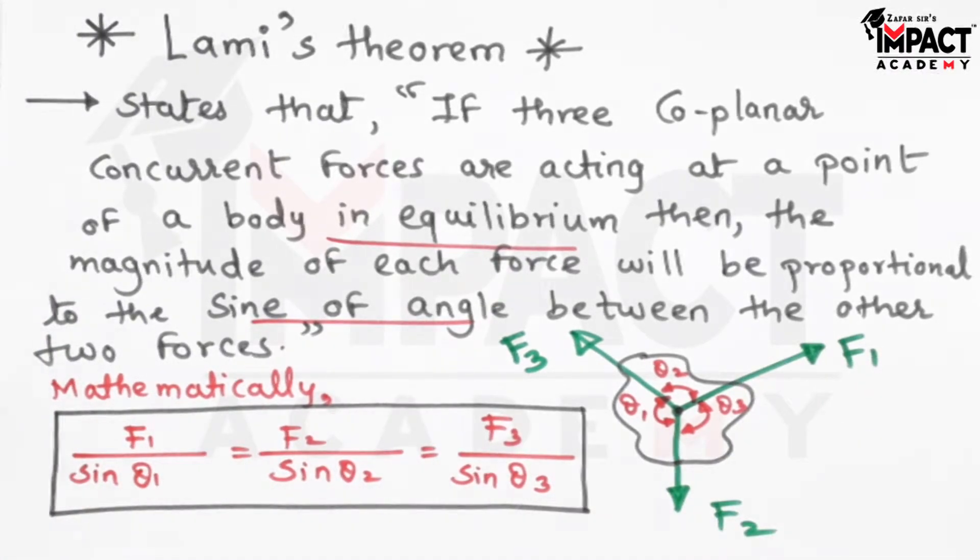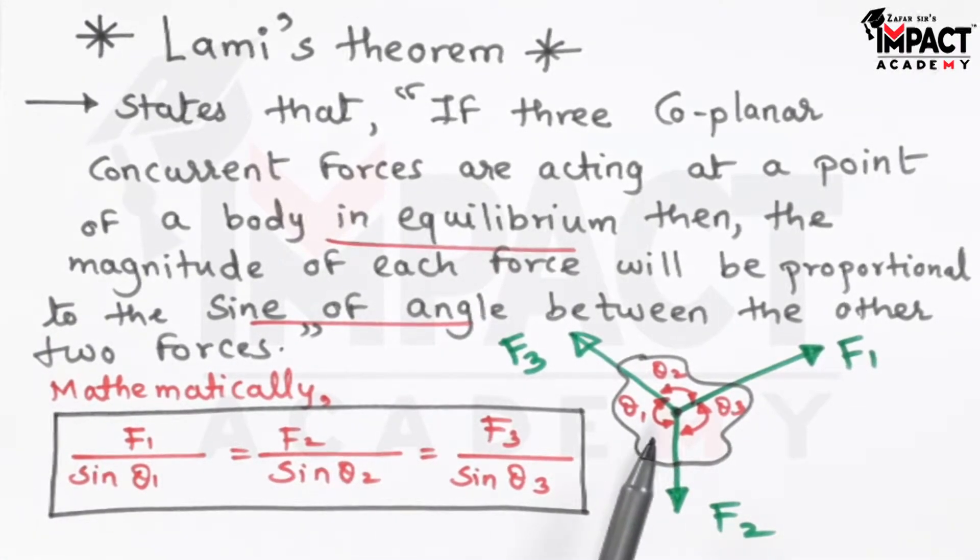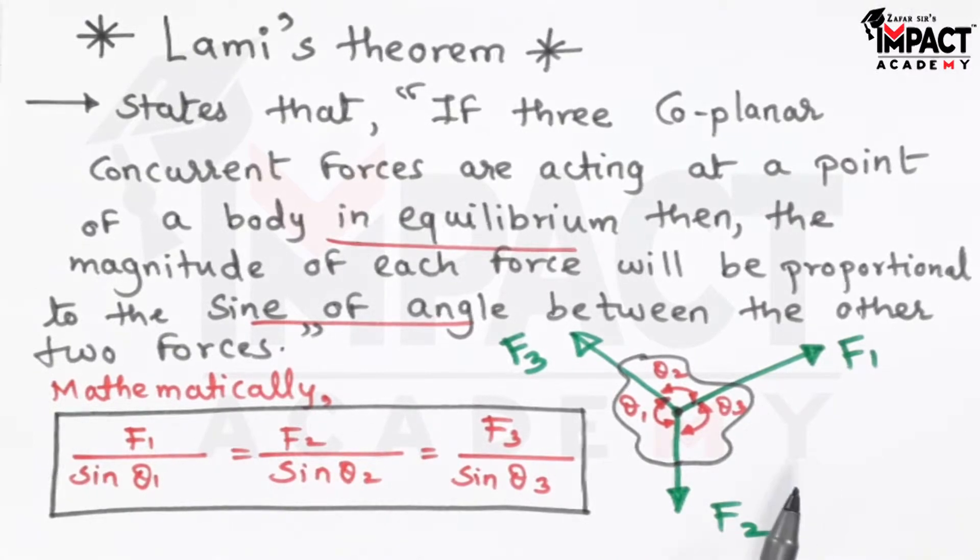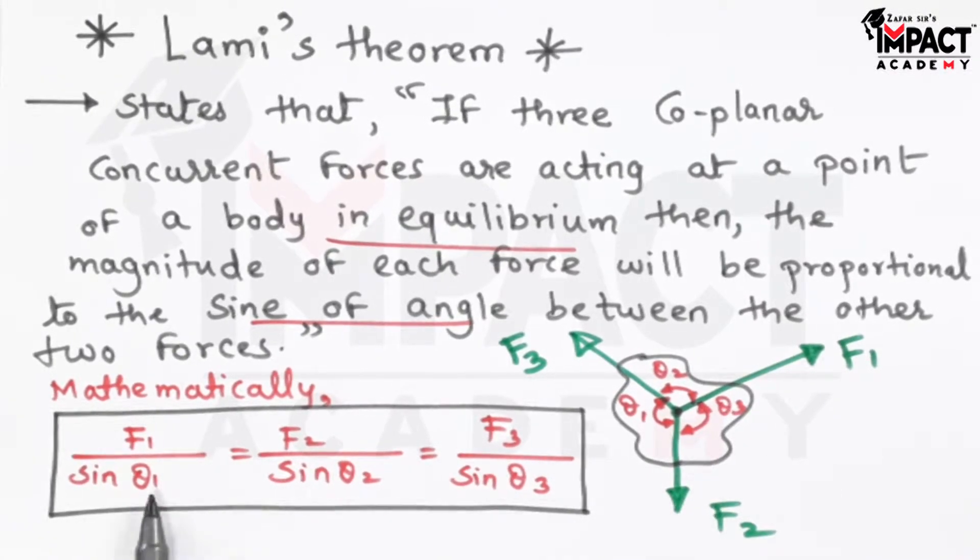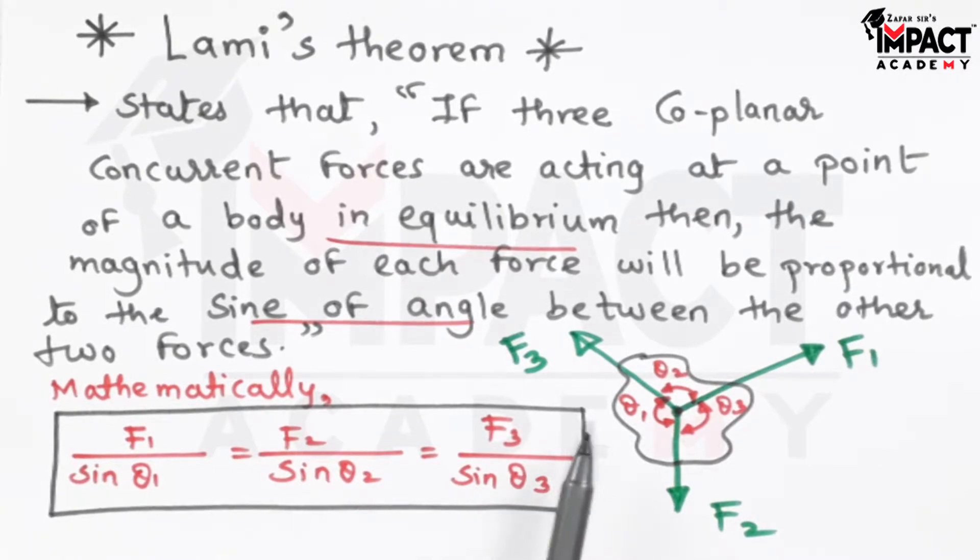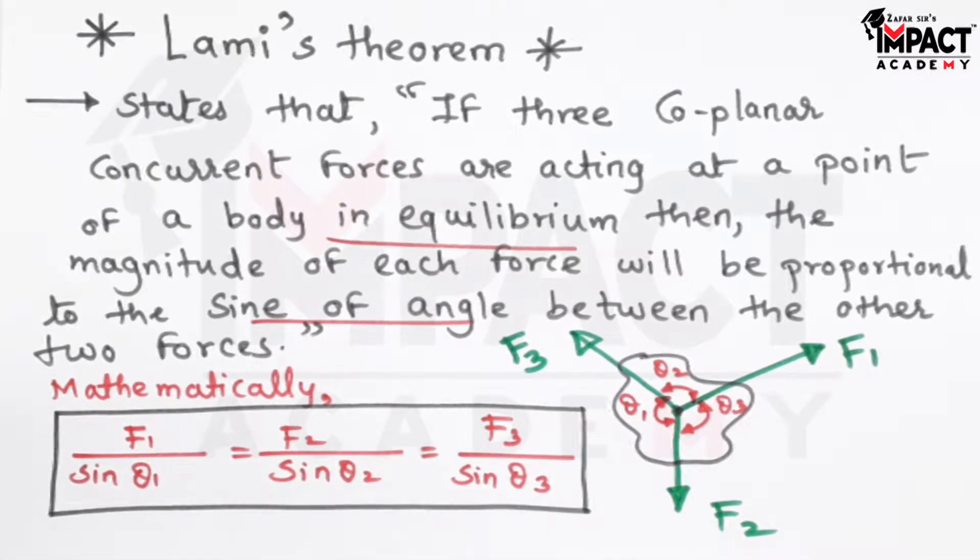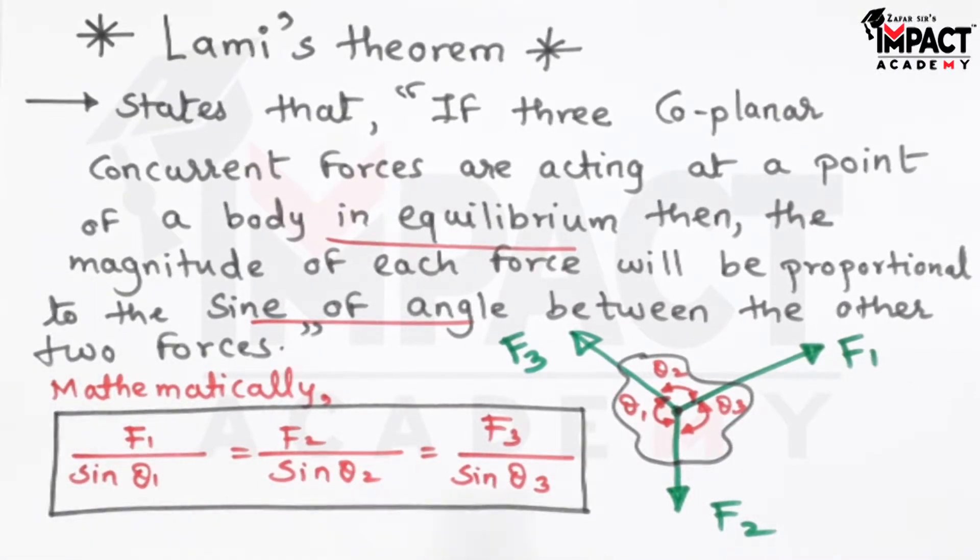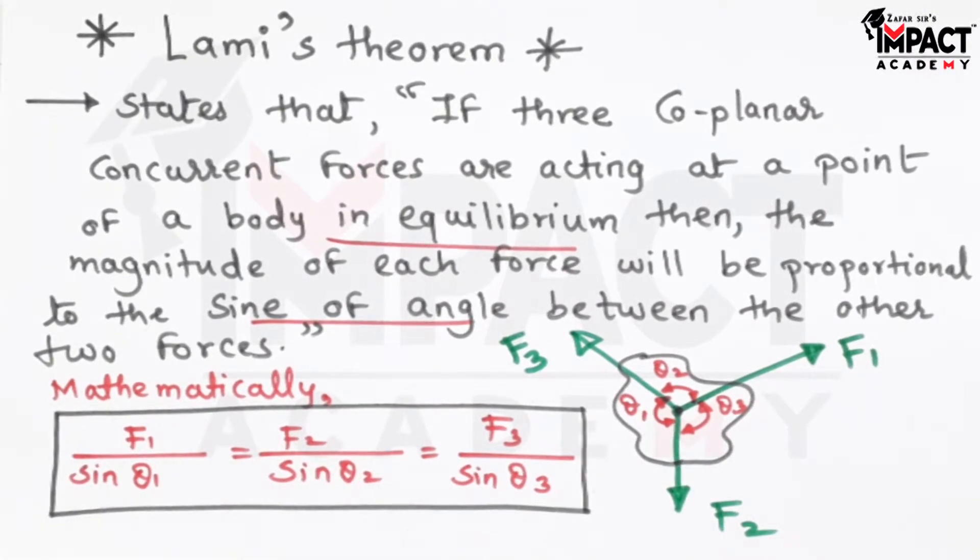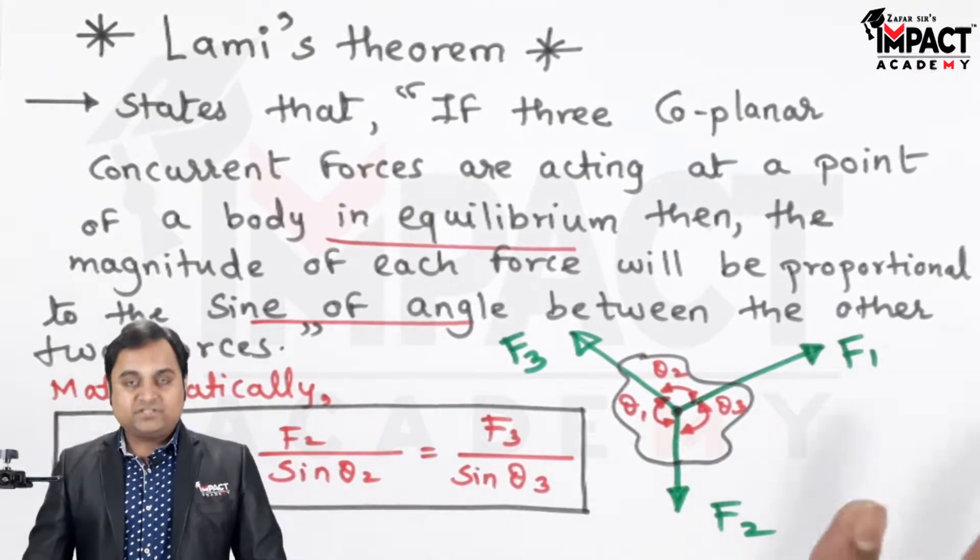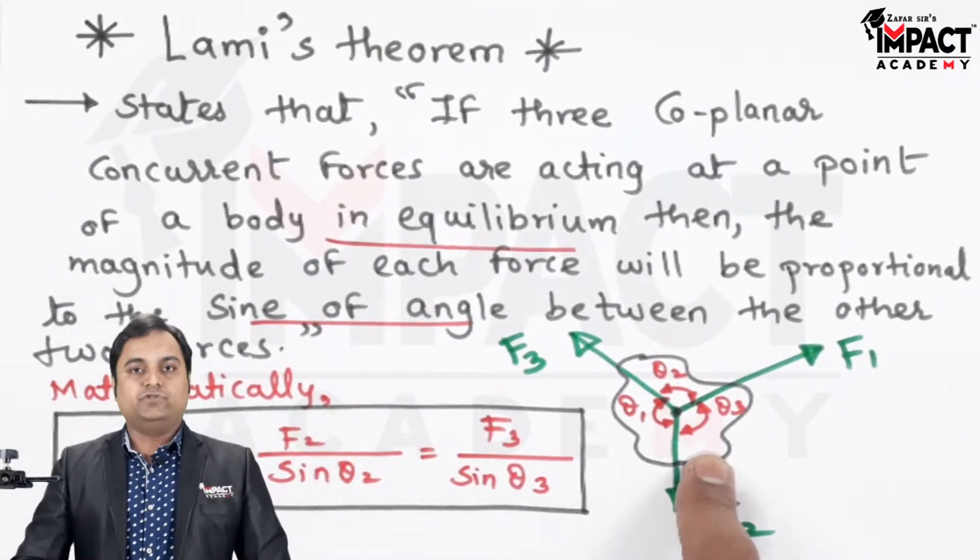With the help of this result, we can calculate all the forces, but at least we should know all the angles and any one of the given forces so we can calculate the remaining forces. That was the short description regarding Lami's theorem. Here I am just giving the end result of Lami's theorem and not the entire proof. This theorem would be used only if there are three concurrent forces.